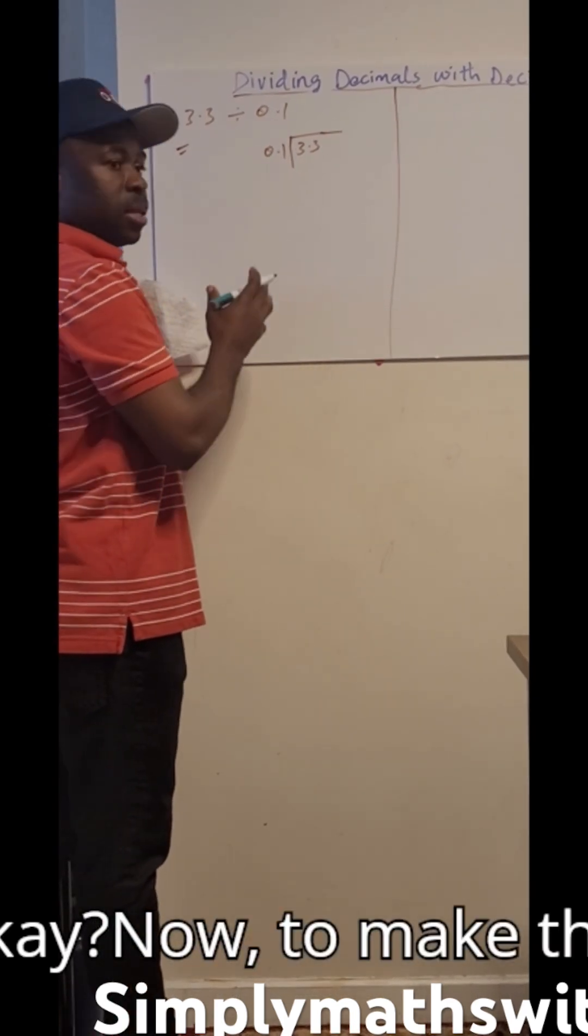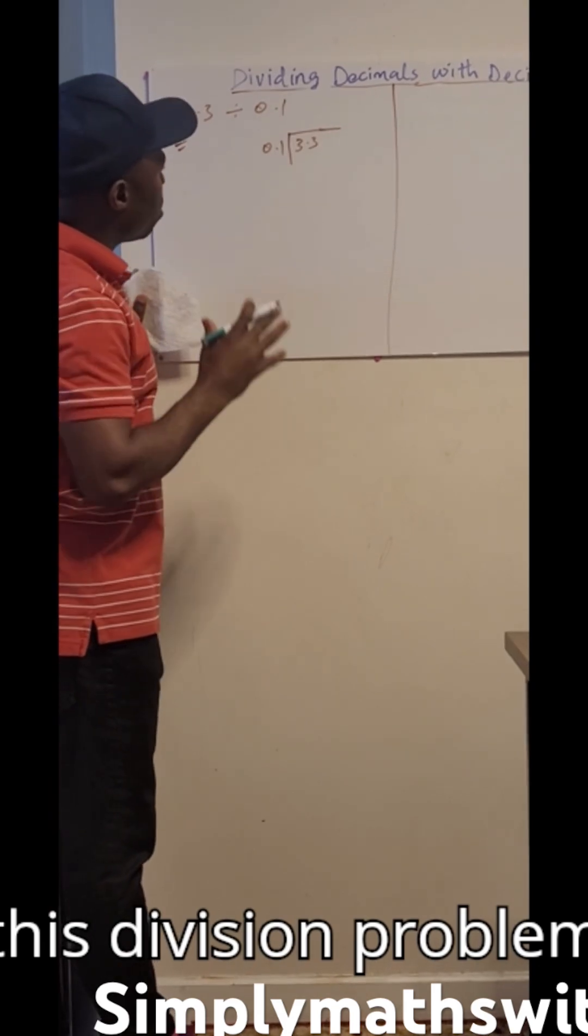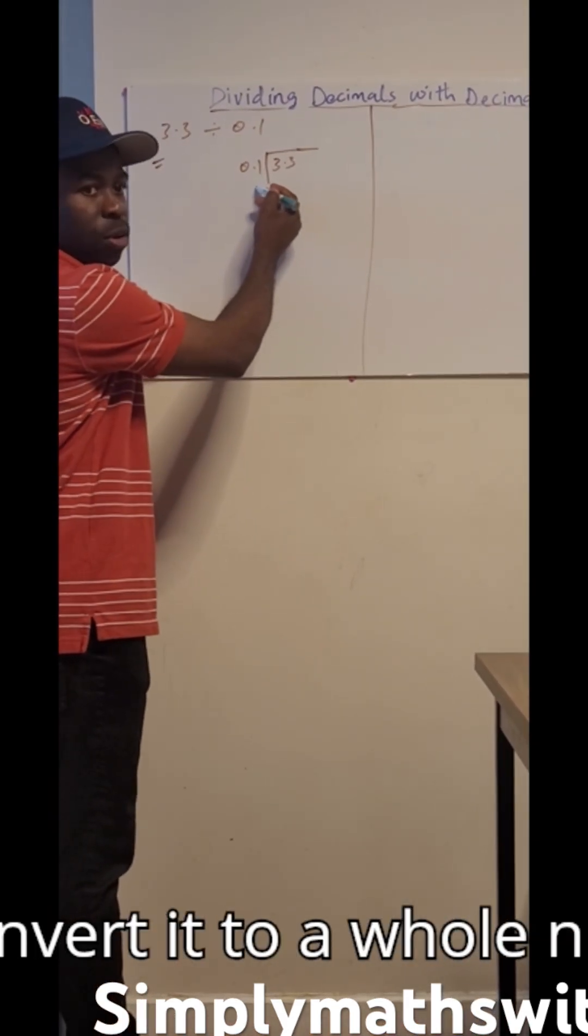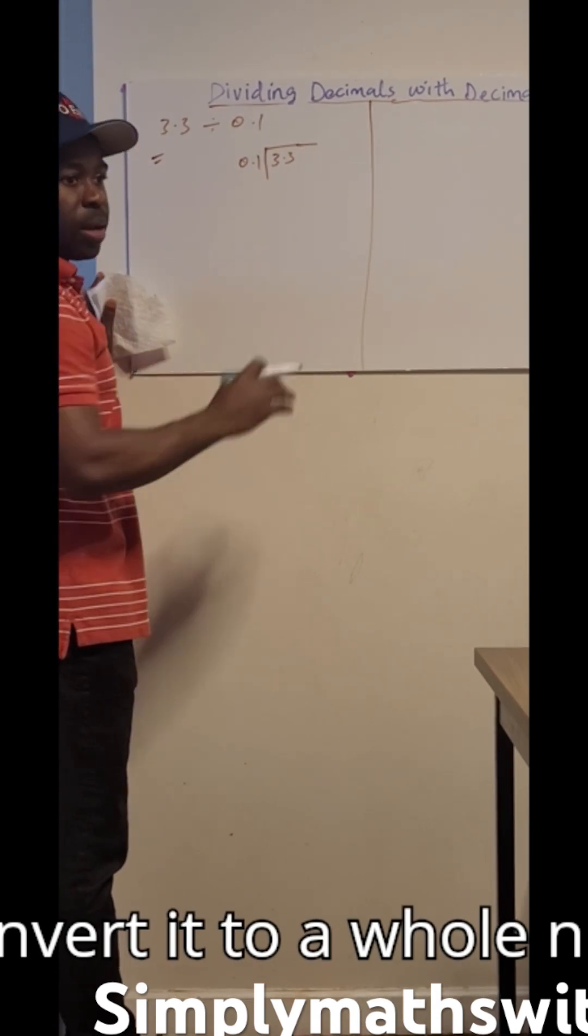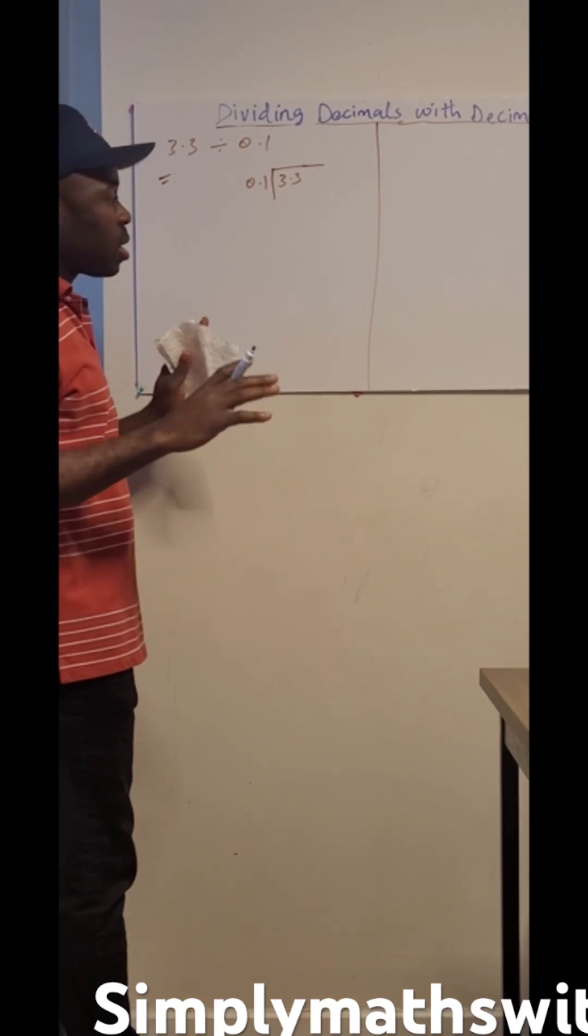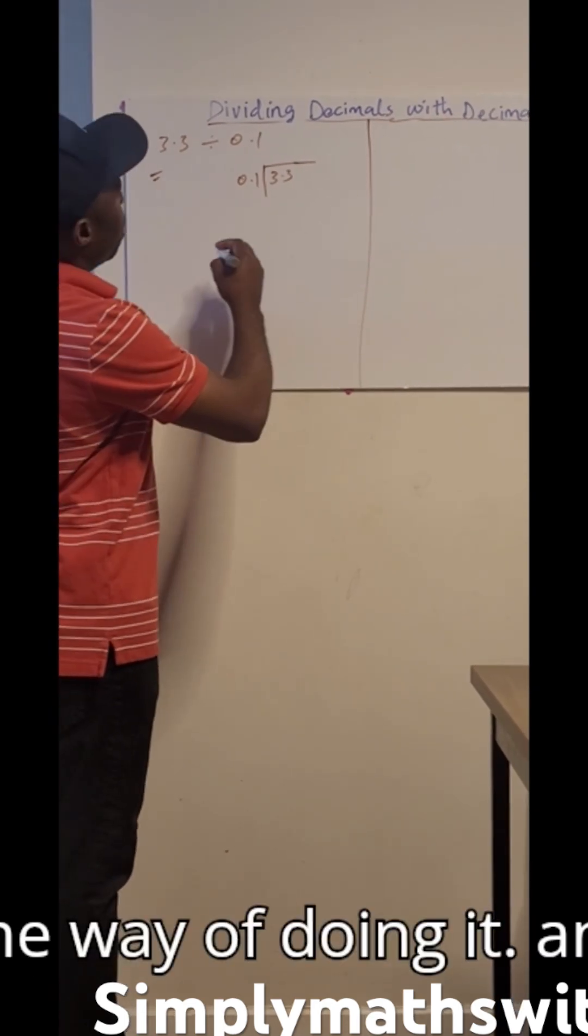Now, to make this easy, this division problem easy, we try to make the divisor a whole number, convert it to a whole number. And there are so many ways to do that. But today I'm going to show you one trick, one way of doing it.